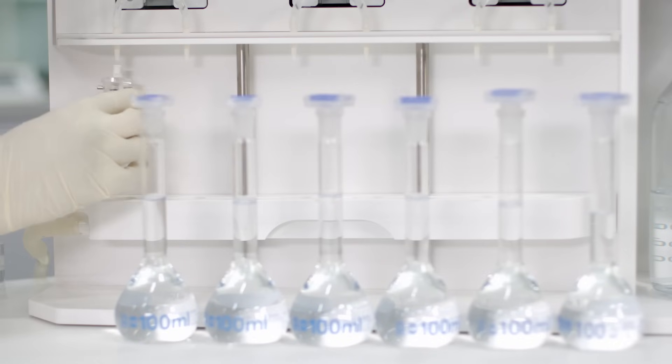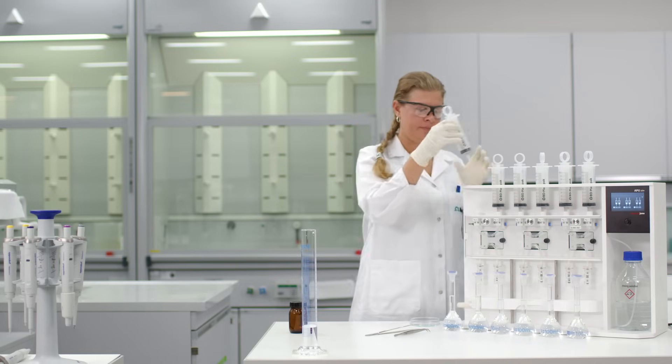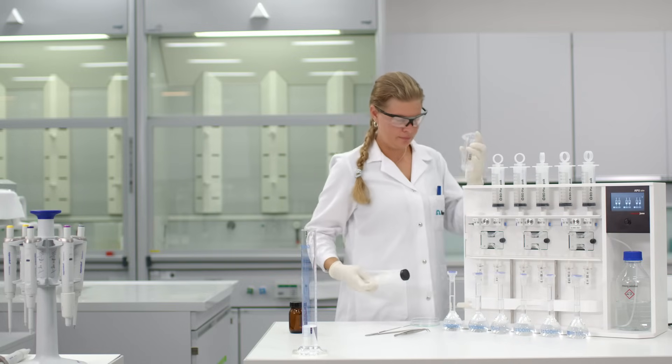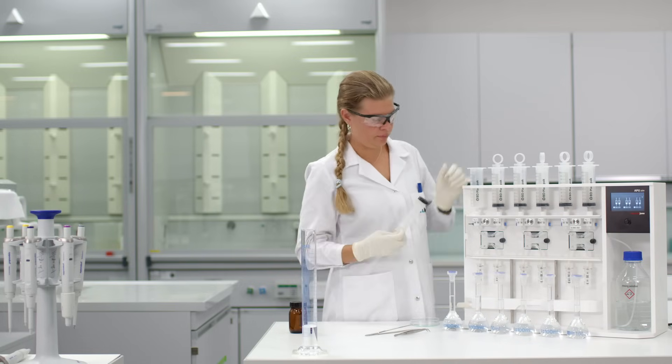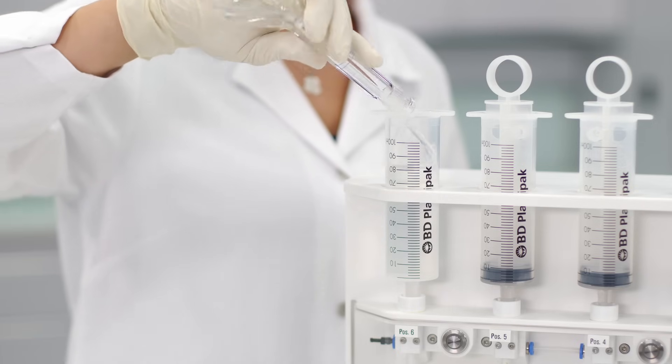Once assembled, mount the cartridges in the automatic sample preparation unit. Fill the 100 milliliters of sample into the syringes and start the pre-concentration process.